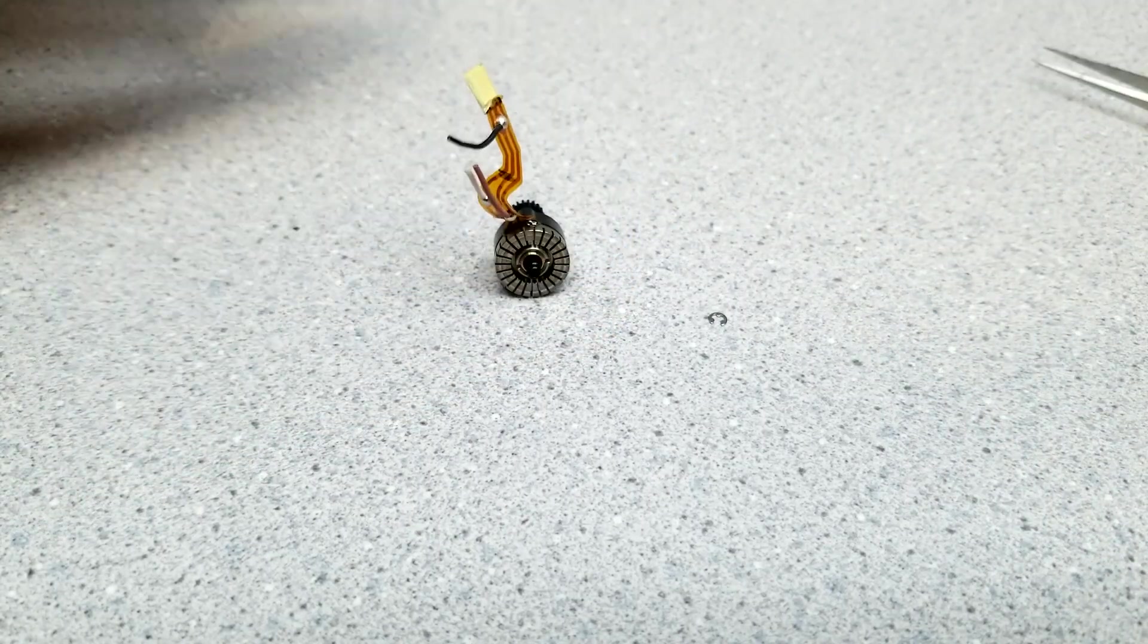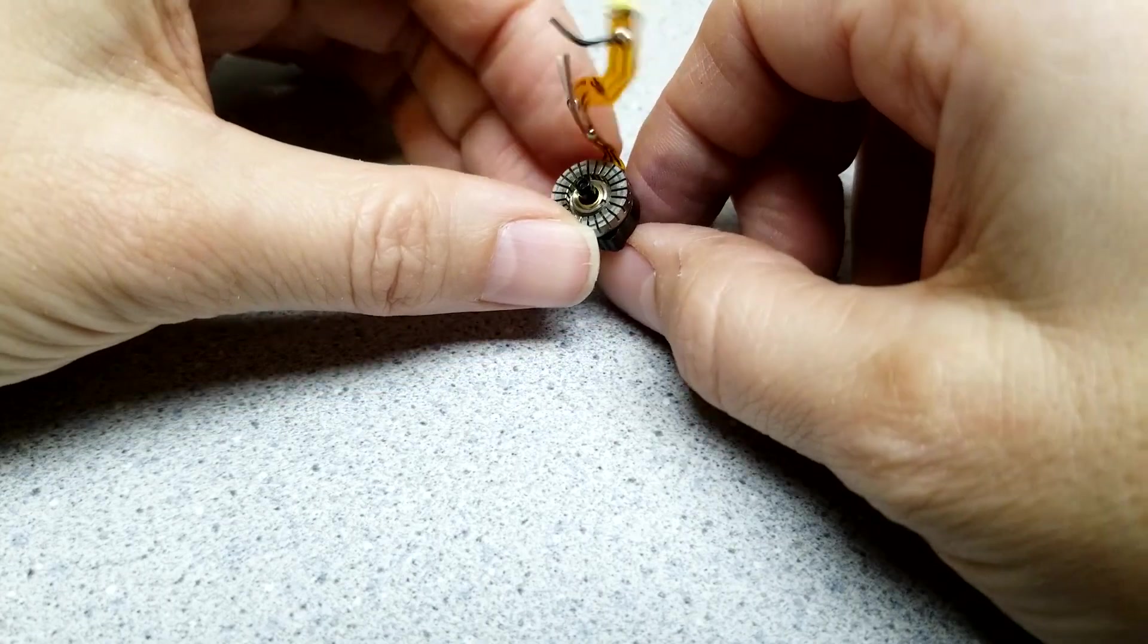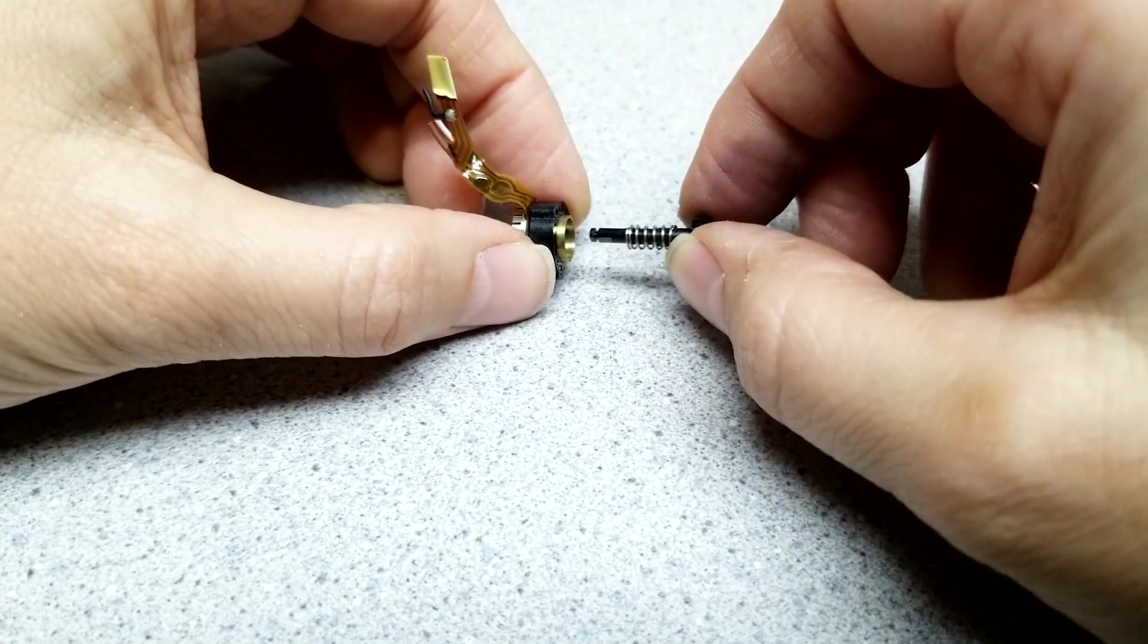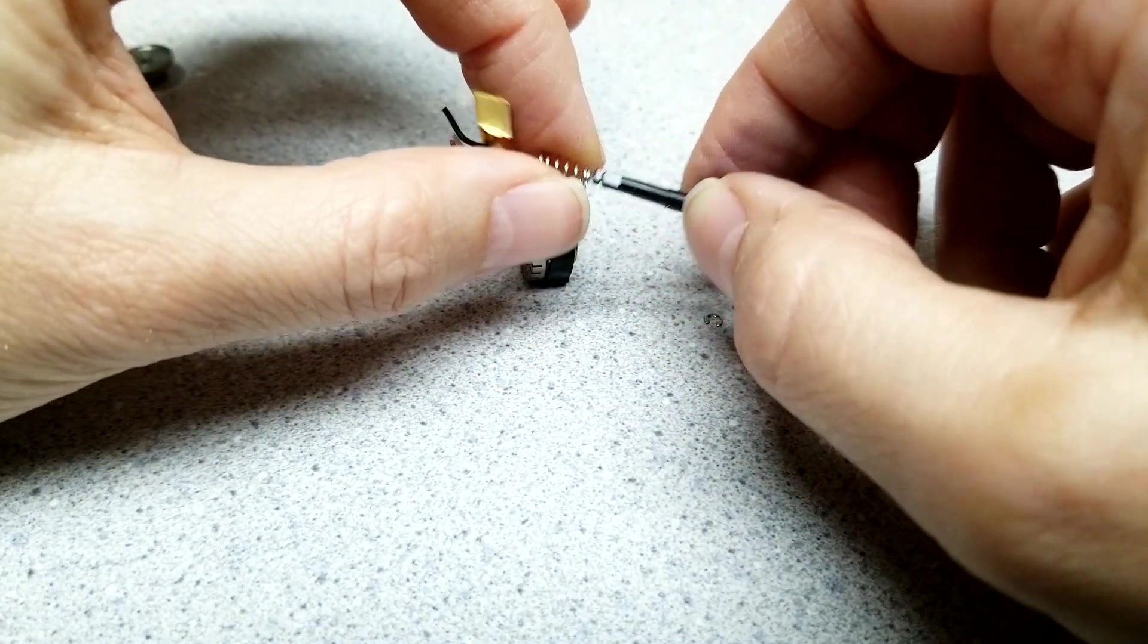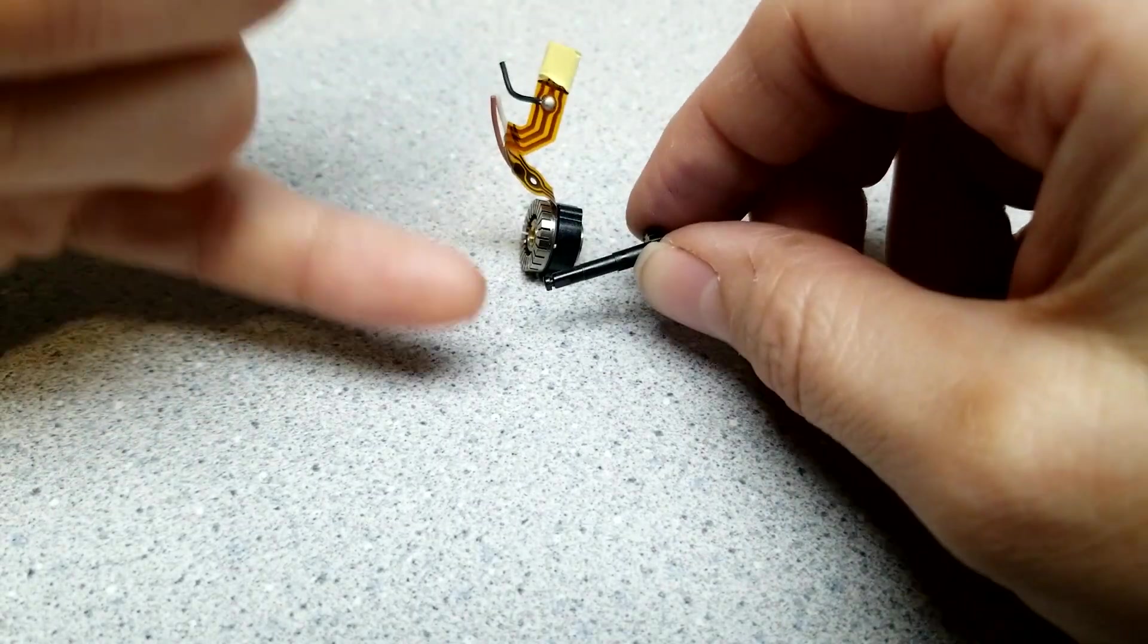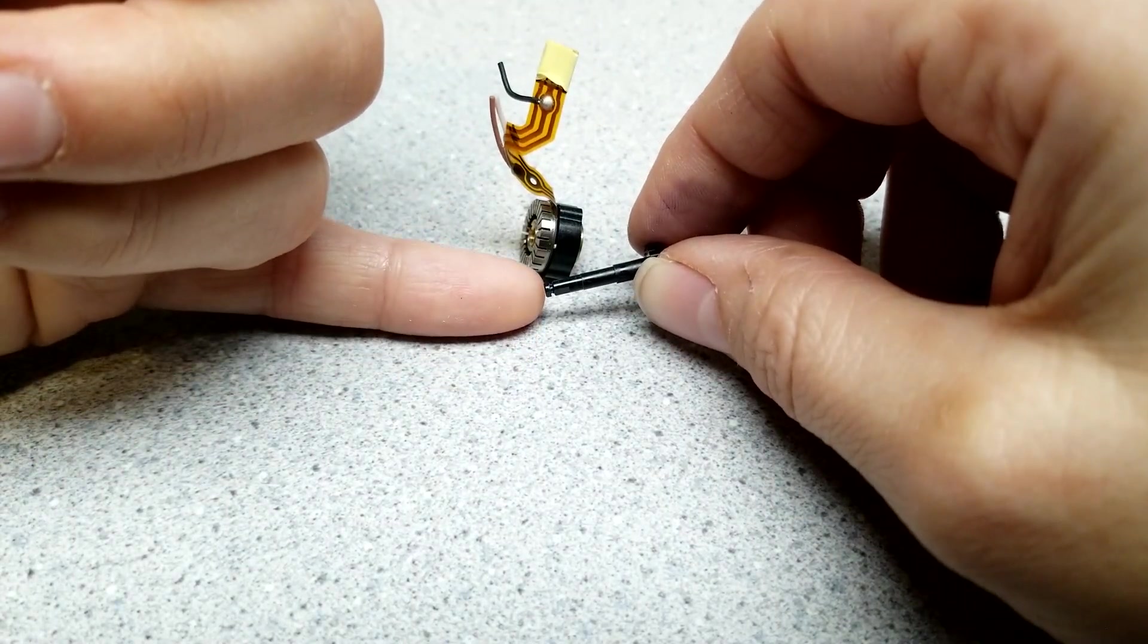Now the shaft seems to want to come out. And it's got a little spring on it and a little gear. And you can see the little slot for the clip.